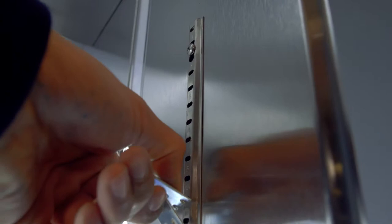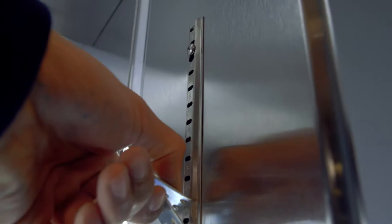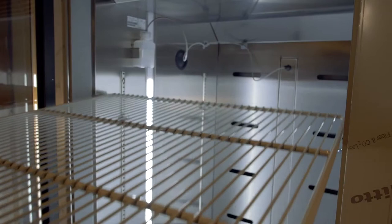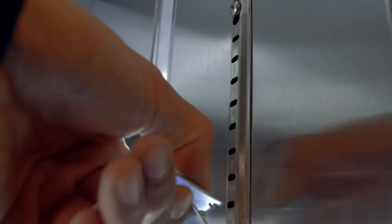To install the shelves, locate the shelf clips removed previously and the remaining clips from the cardboard accessory box. Install the clips flat side up as directed by the site contact. Once the clips have been installed, insert the shelves and ensure each shelf is level.